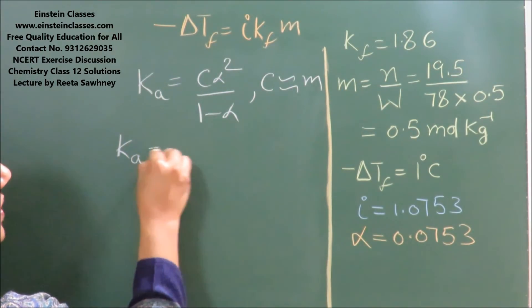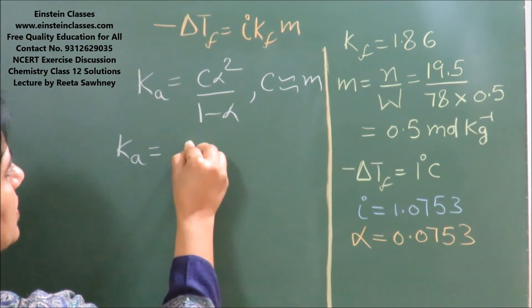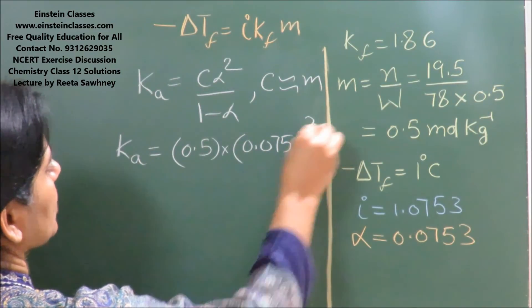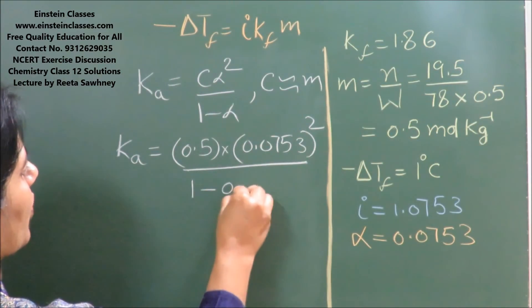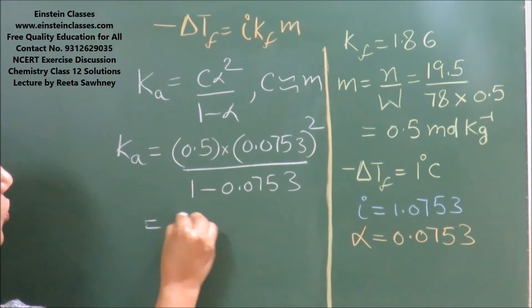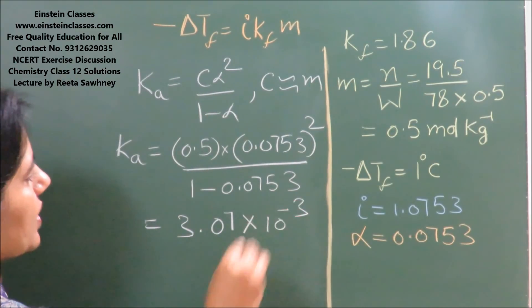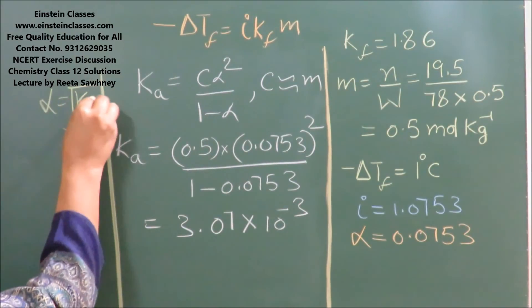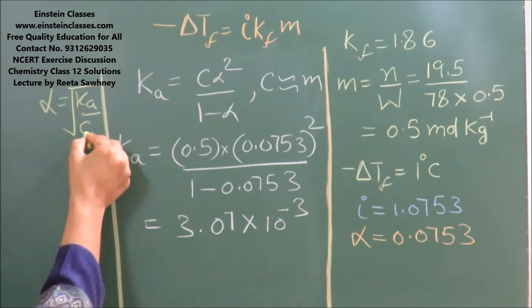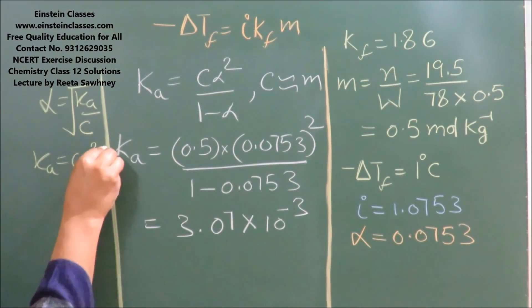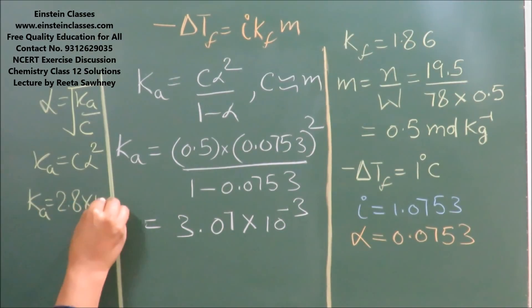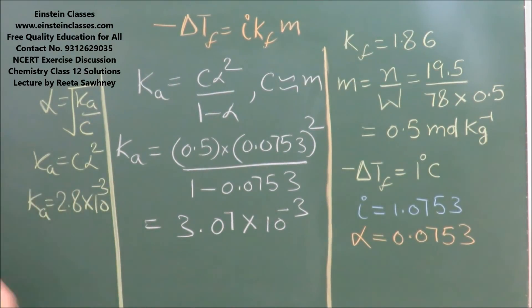So ionization constant of acid is equal to: c is 0.5, α is 0.0753, the whole square upon 1 minus 0.0753. So it will come out to be 3.07 × 10⁻³. But if we have taken this relation α = √(Ka/c), using the value of α and c, the Ka is 2.8 × 10⁻³, and the accurate value is 3.07 × 10⁻³.